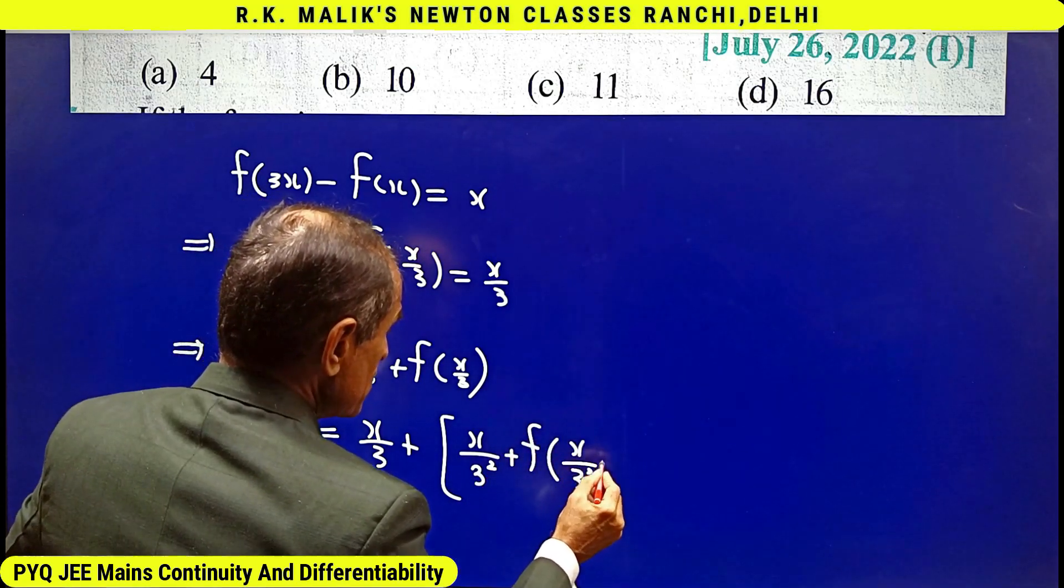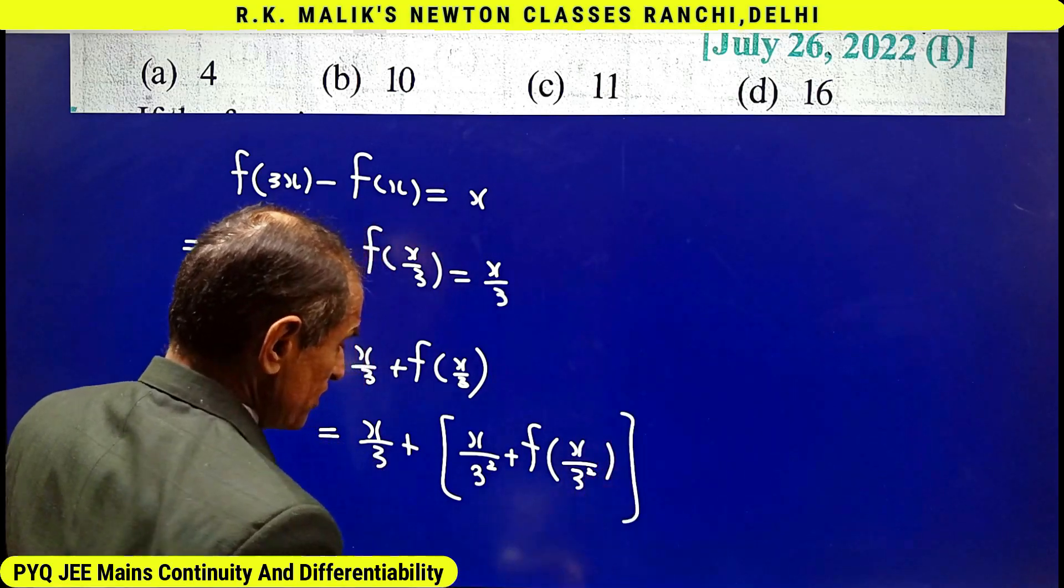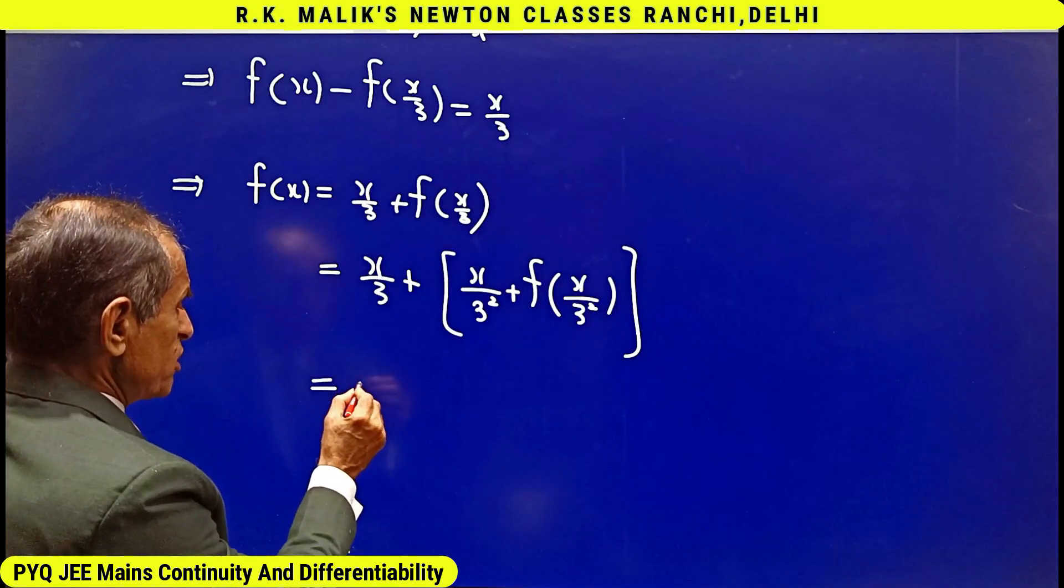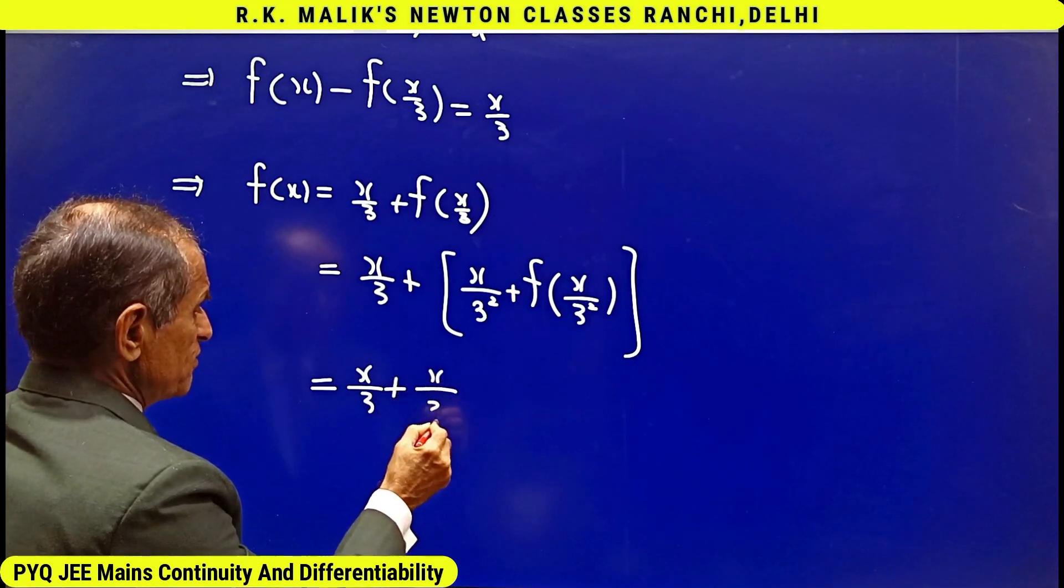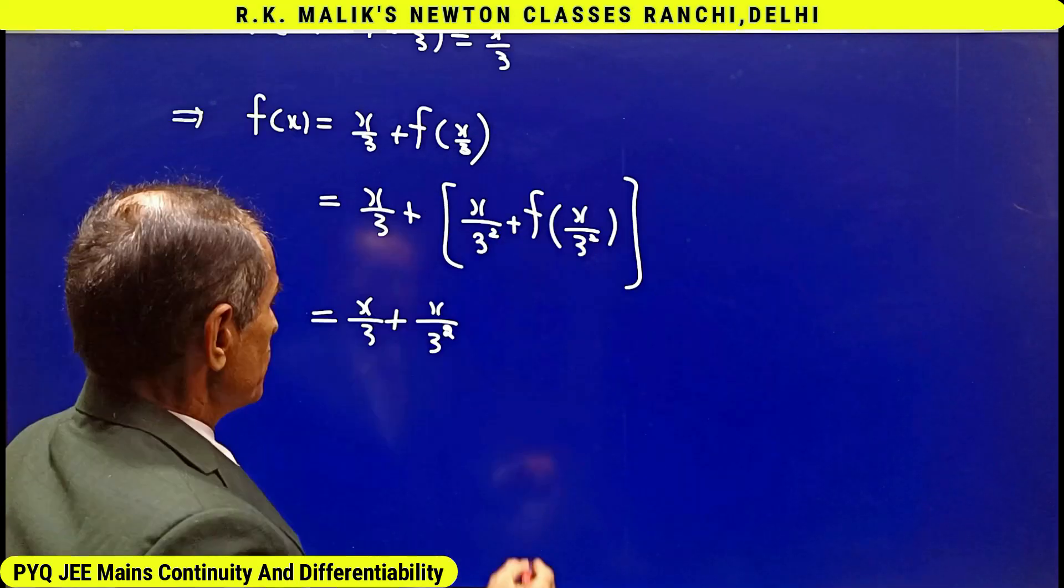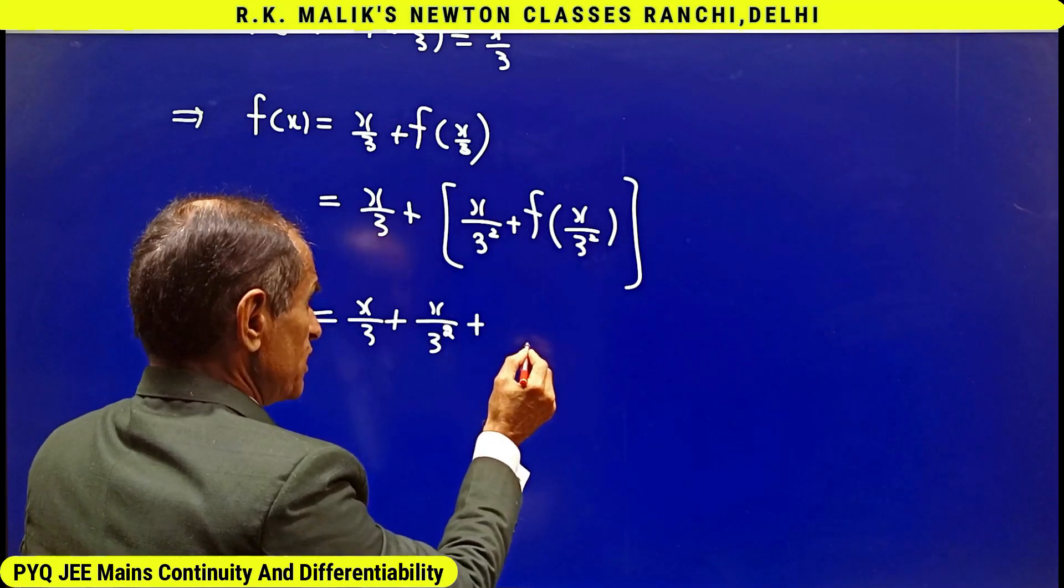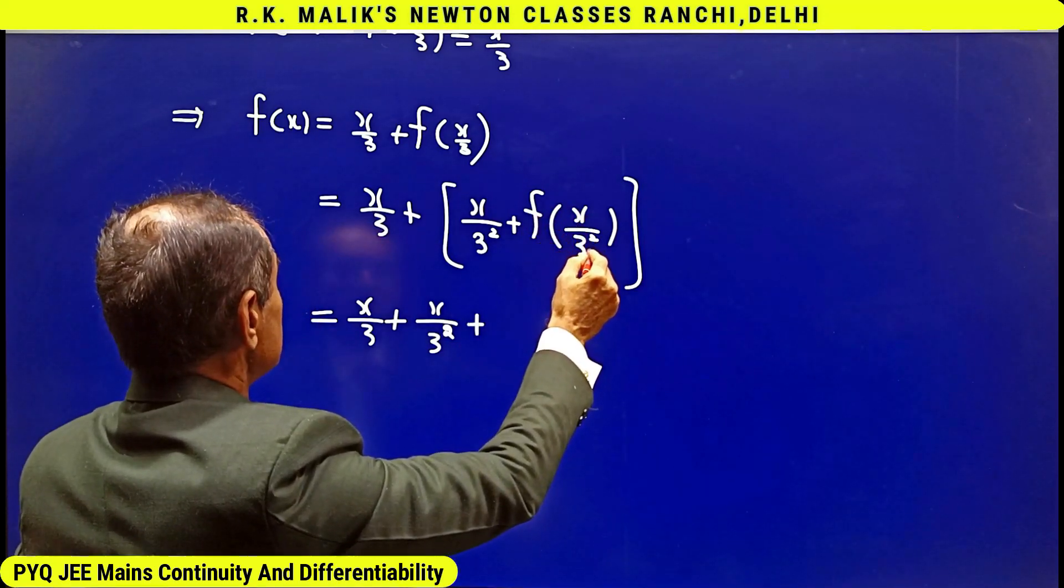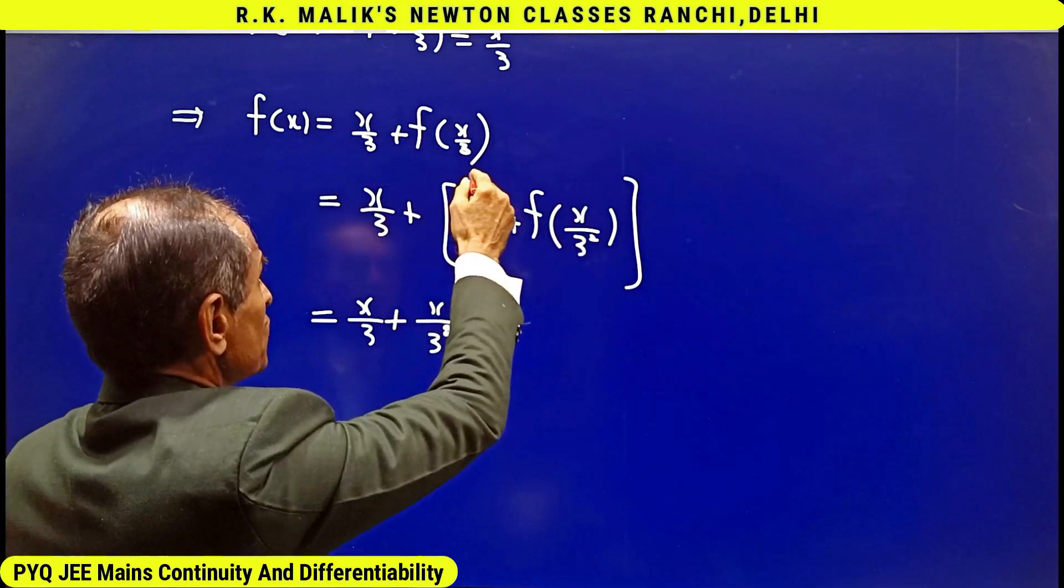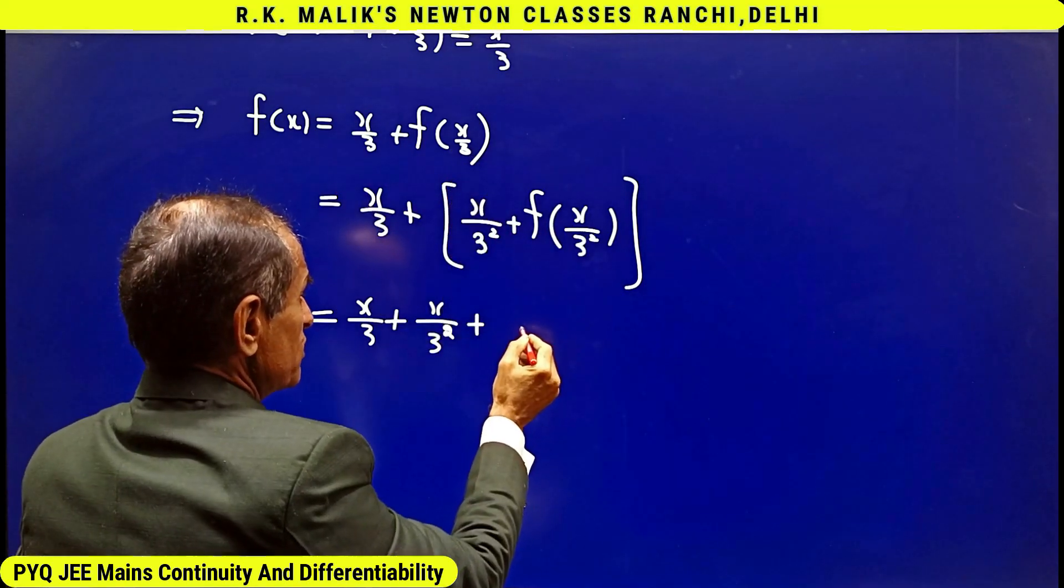That is I have got x/3 + x/9. Again using the same operation, the value of f(x/9)—keeping this given equation in mind we get x/27 + f(x/27).